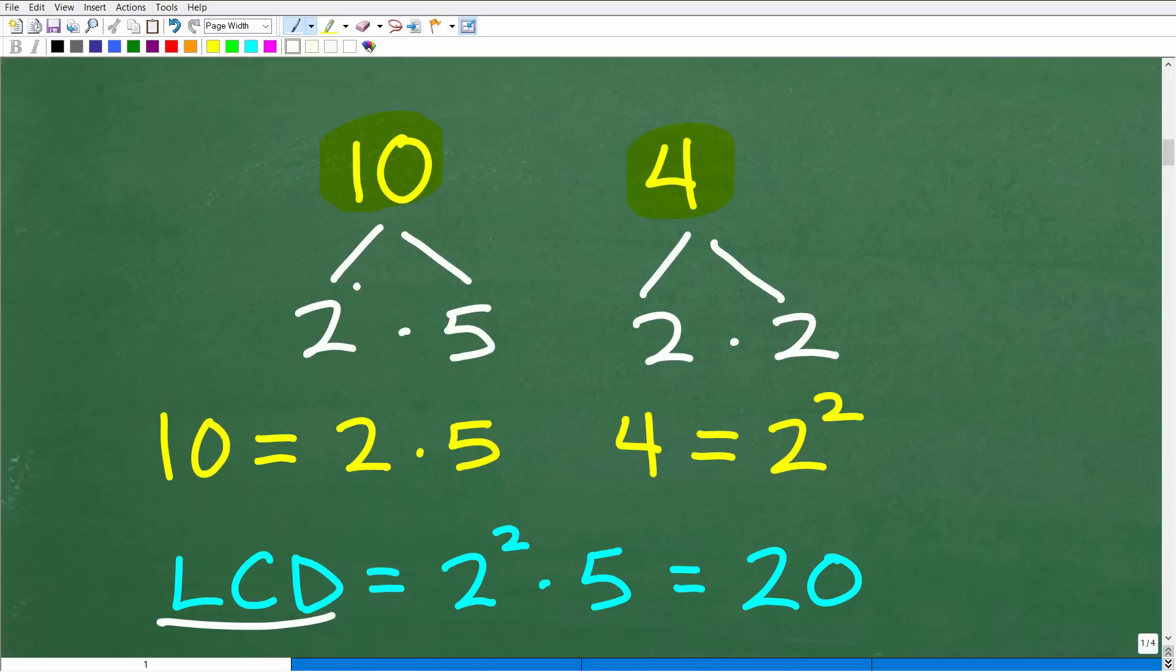We're going to break this up using a factor tree and think about what numbers we can multiply together. These are called factors, such that when we multiply them, we get back to this number.